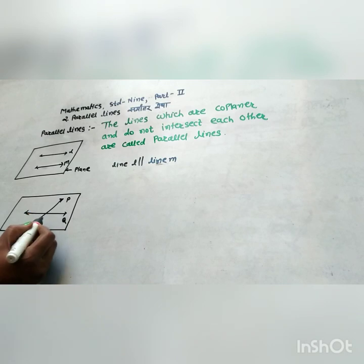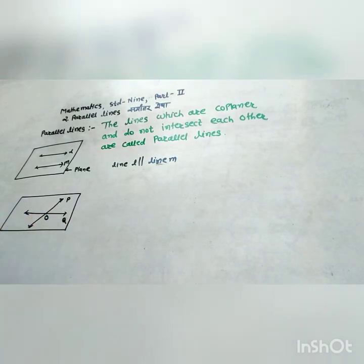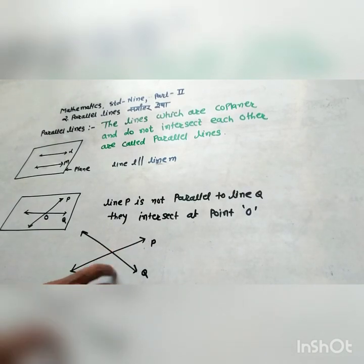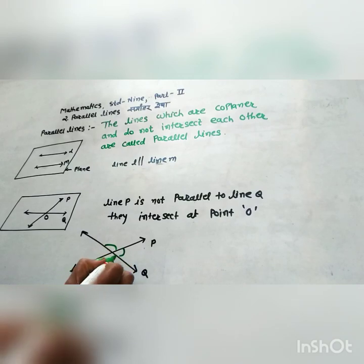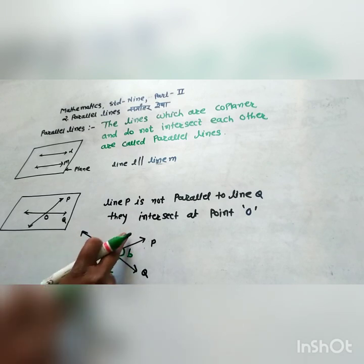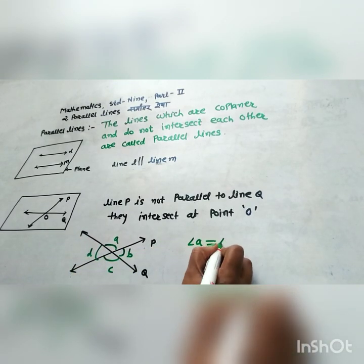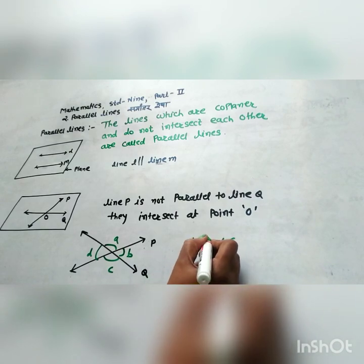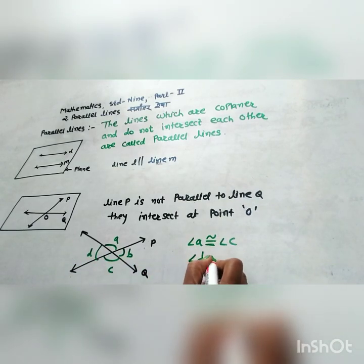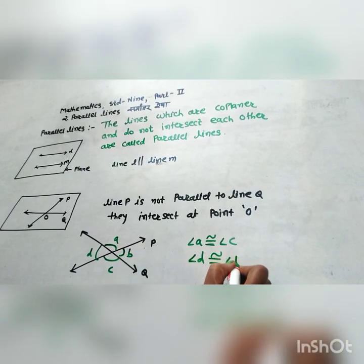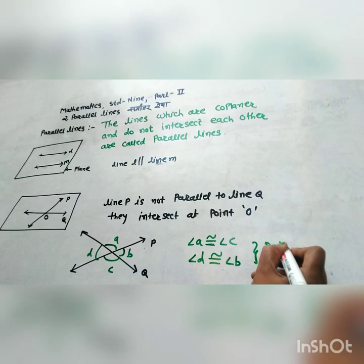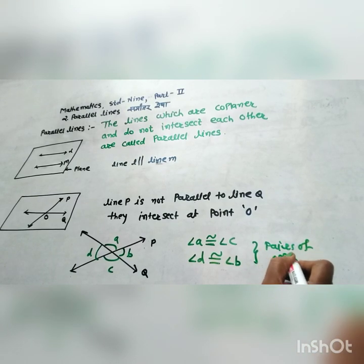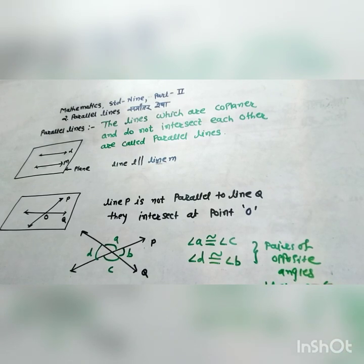These two lines are not parallel because they intersect each other at a point O. When two lines intersect each other, four angles are formed: A, B, C, and D. Angle A and angle C are opposite angles — they are congruent or equal. Similarly, angle D is congruent to angle B. These are pairs of opposite angles, and opposite angles are congruent.